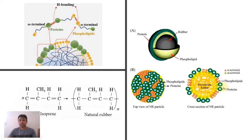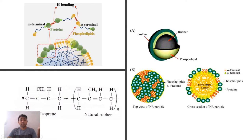Phospholipid molecules and protein molecules are interconnected with polyisoprene and rubber molecules. Hydrogen bonds are formed between proteins and between phospholipids through omega and alpha terminals. The polymer inside the rubber particle is a polymer of 2-methyl-1,3-butadiene, which is 1,4-cis-polyisoprene. The non-rubber substances in the rubber phase are associated with proteins and phospholipids in the rubber particles.